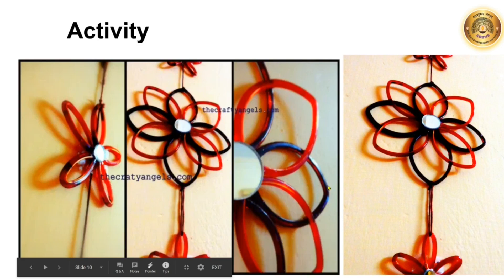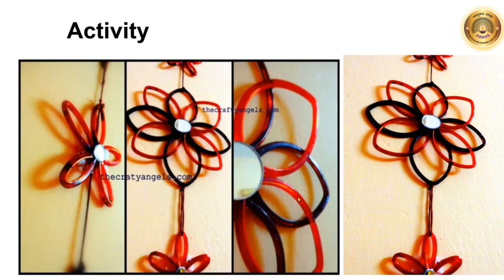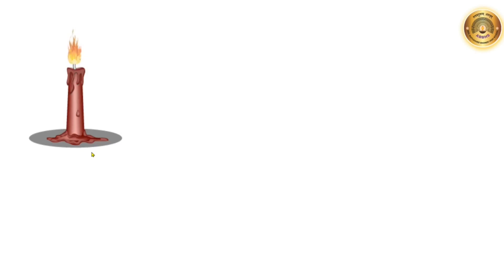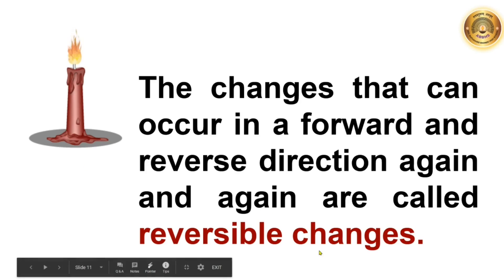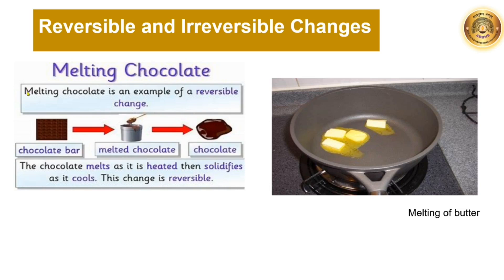Now, this is an activity which can be done using bangle pieces. After heating, you can bend the bangle pieces and form various designs. Melting of wax and obtaining original solid wax again is something that we can do repeatedly. The changes that can occur in a forward and reverse direction again and again are called reversible changes. For example, melting of chocolate is an example of a reversible change. The chocolate melts when you heat it and then it solidifies as it cools. So this is a reversible change.